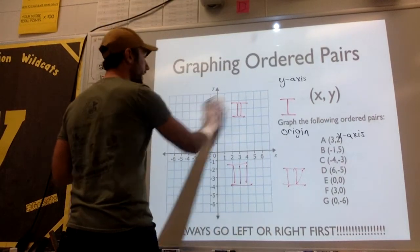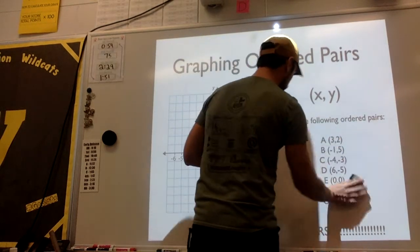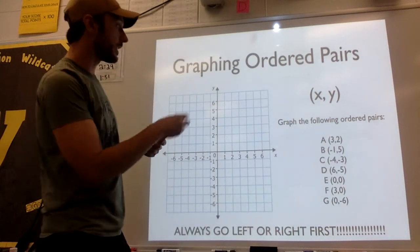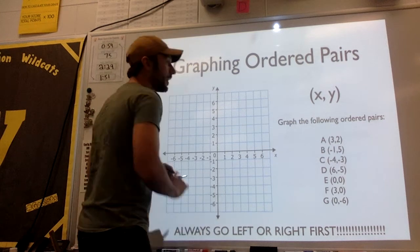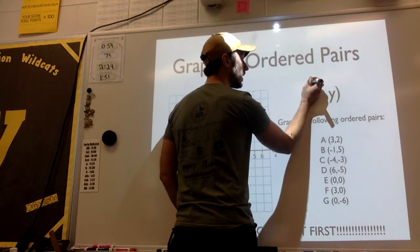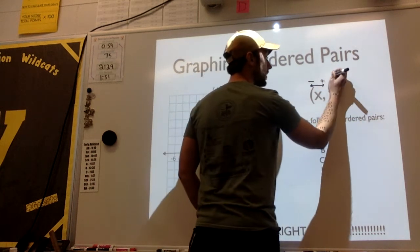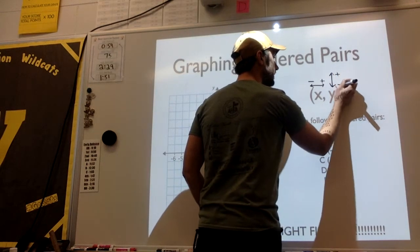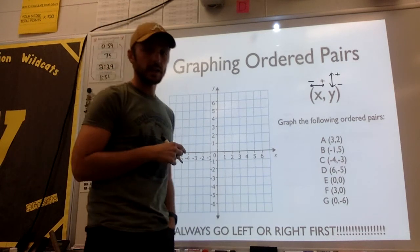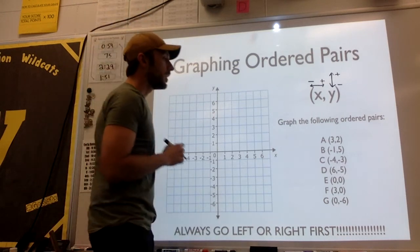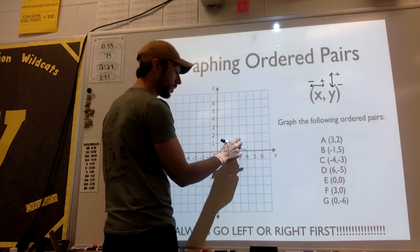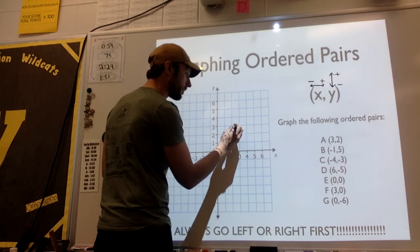Next, we are going to graph some ordered pairs. When we graph ordered pairs, they come in a set of parentheses. Our first number in a pair is always our x-coordinate, and the second number is our y-coordinate. The x-coordinate tells us which way to go left or right — left if it's negative, right if it's positive. The y-coordinate tells us to go up or down — up if it's positive, down if it's negative. When we graph these, we always start at the origin, then move left or right first, then up or down. My first one is (3, 2), so I'm going to move right 3 and then up 2. I make a dot right there — that is my point A.